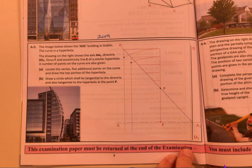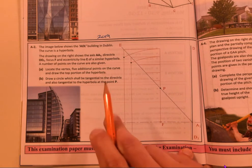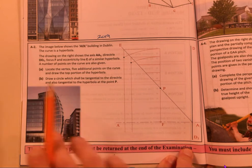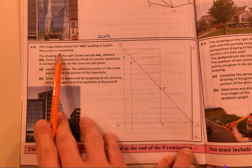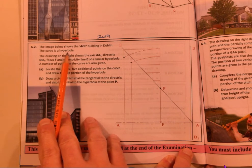Alright, I'm going to talk through a couple of the short questions that you should be able to give a go. 2019 A2, you've got the image showing the AOL building in Dublin. The curve is a hyperbola. Straightaway it's a hyperbola.